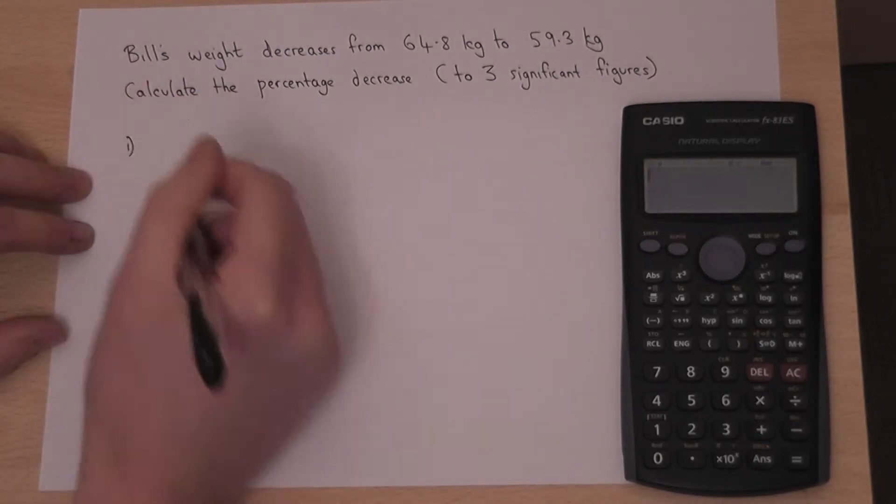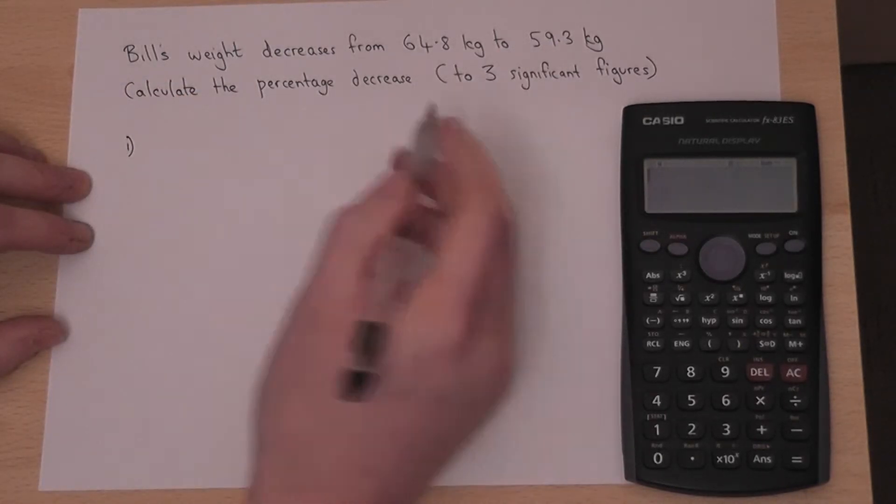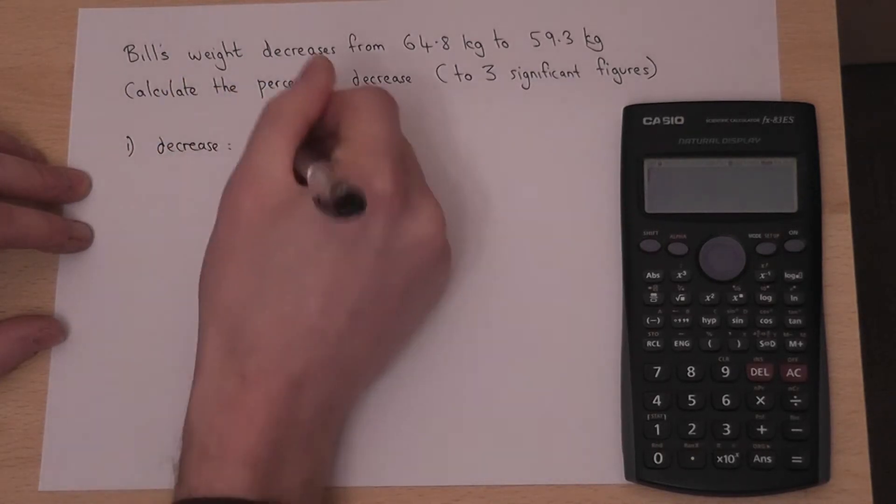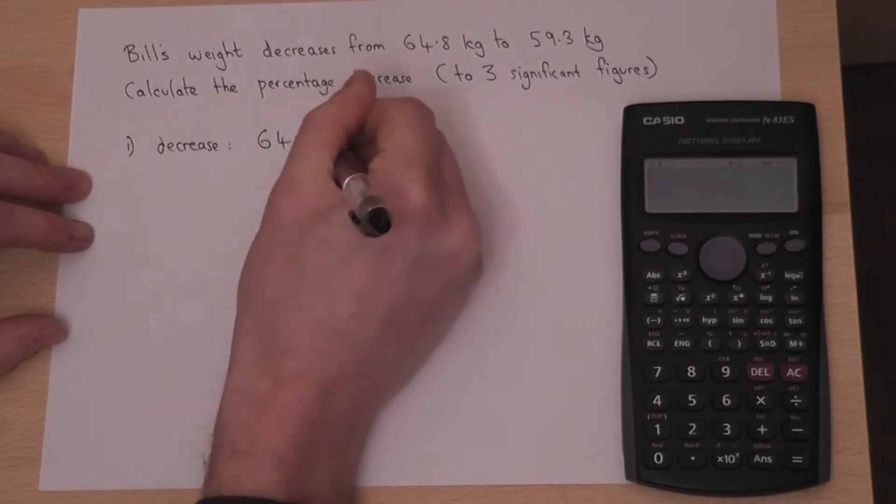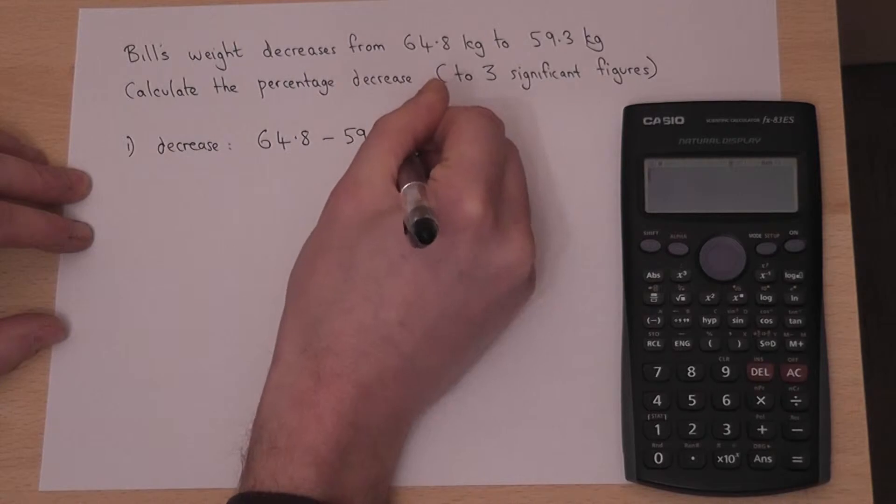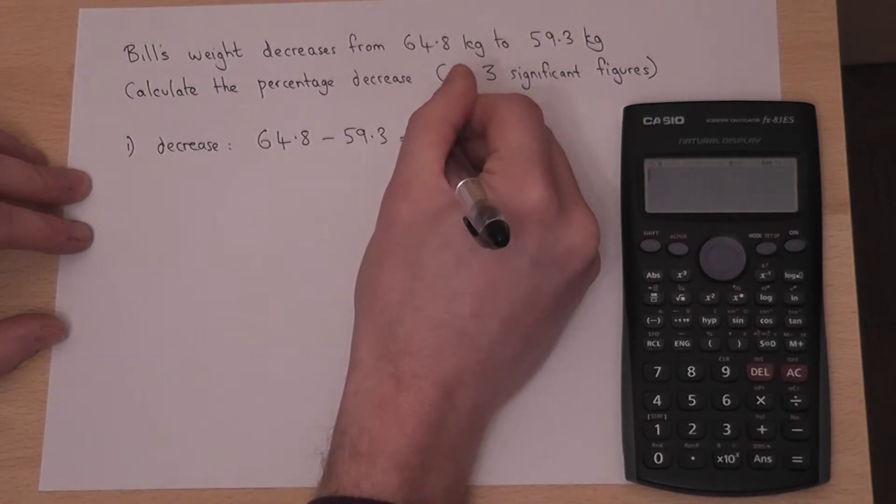Now to work this out we work out what the actual decrease is. So the decrease is 64.8 take away 59.3, which works out at 5.5 kilograms.